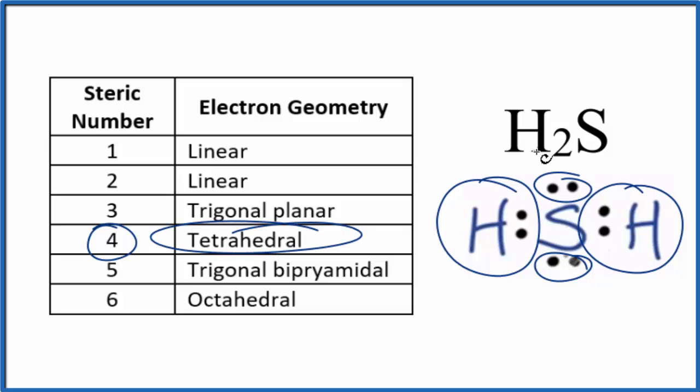Tetrahedral is the electron geometry for H2S, hydrogen sulfide. This is Dr. B, and thanks for watching.